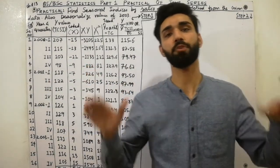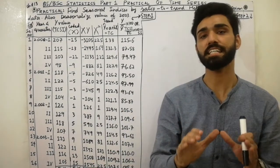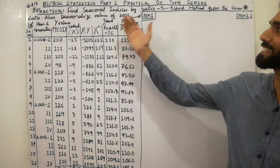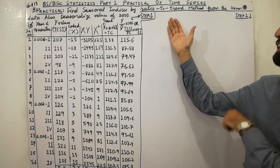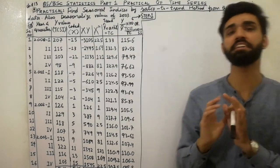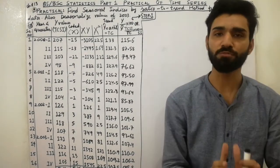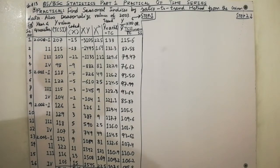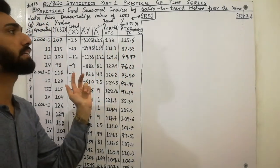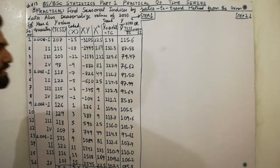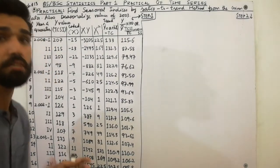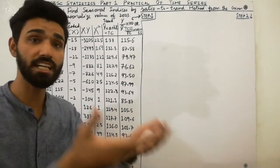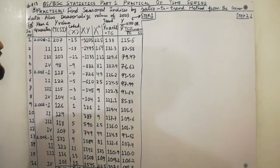Assalamu alaikum, friends. Today I am here to explain how to solve the science practical of time series, in which we will find seasonal indices by using the ratio to trend method. This is a very important practical, so must watch this lecture completely. There are three steps to solve it. Step one is already done. You can watch my videos on method of least squares, ratio to moving average method, and link relative method — those lectures are available in the description.